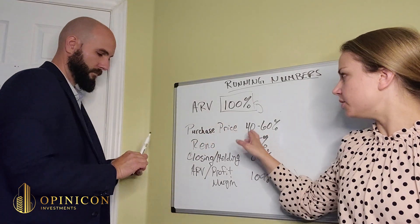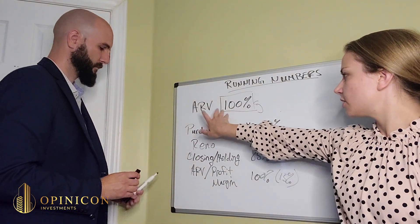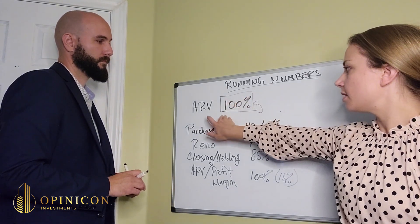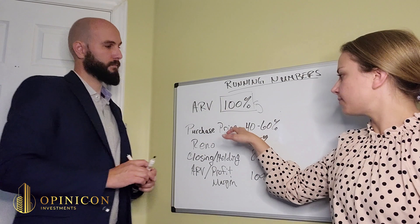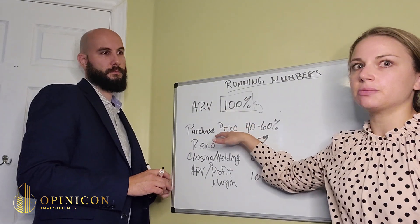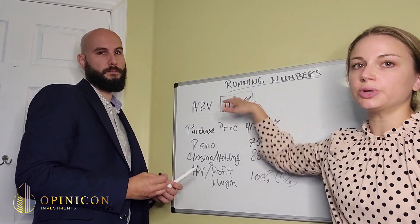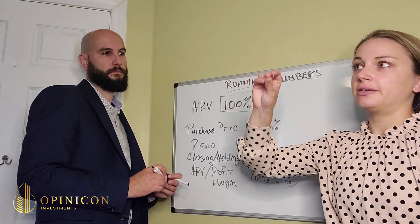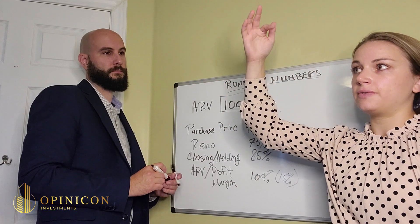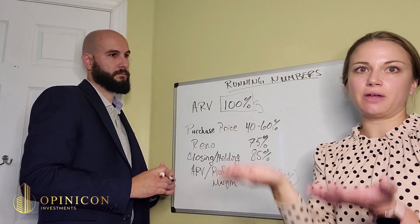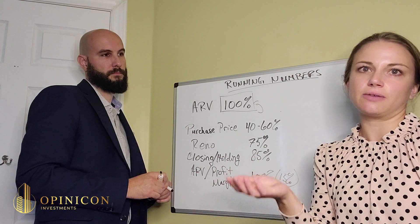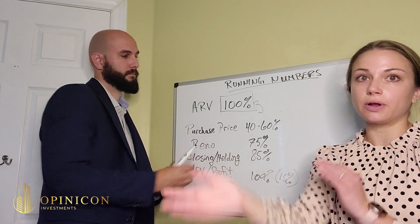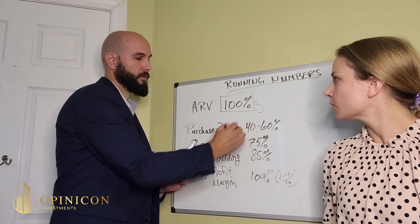This is a good way of figuring out what you need to buy a property for. As soon as you look at a property, you say: this is my ARV, I need to buy it at 40% to 60% — so this is what I need to purchase it at. It's a really quick way to look on MLS or off-market, find your ARV, figure out what you can pay, and know exactly what you need to offer.